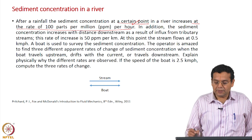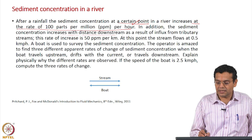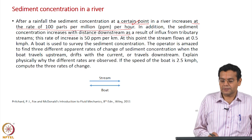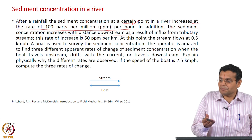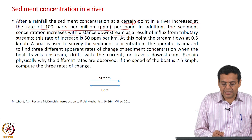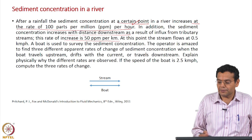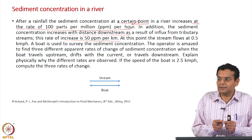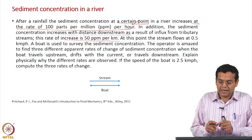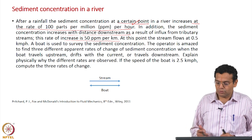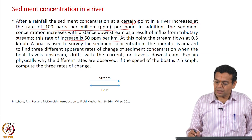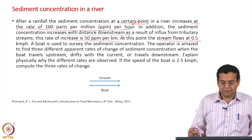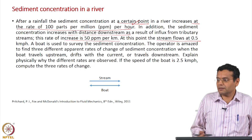In addition, the sediment concentration increases with distance downstream as a result of influx from tributary streams — this is the spatial variation. This rate of increase is 50 ppm per kilometer. You are given the rate of change of sediment concentration at a point, how concentration increases as you move downstream, and the velocity of the stream, which flows at 0.5 kilometers per hour.